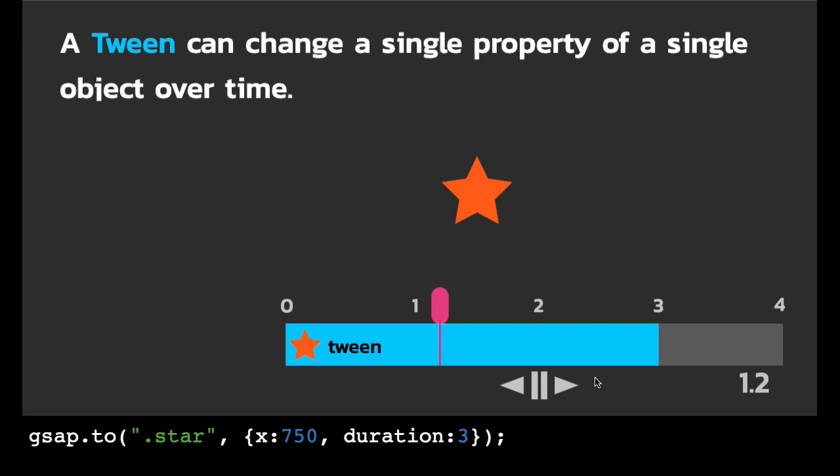And in addition to controlling tweens like this, we can also inspect them. You'll see on the bottom right here that this current tween has its playhead at a time of 1.2, and that sort of information we can get programmatically. I'm not going to get too deep right now, let's move on to the next screen.